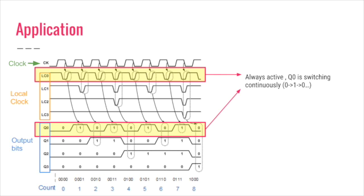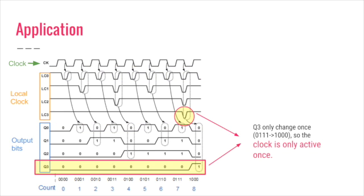To see more clearly the difference of a clock gated counter, let's observe on Q3 the most significant bit. Counting from 0 to 8, the value of Q3, the most significant bit, only switch once. In this case, our clock gating circuit perform in a very smart way with LC3, the local clock 3, only switch once. The clock gating circuit compared to the conventional counter, it avoids all the redundant transitions.